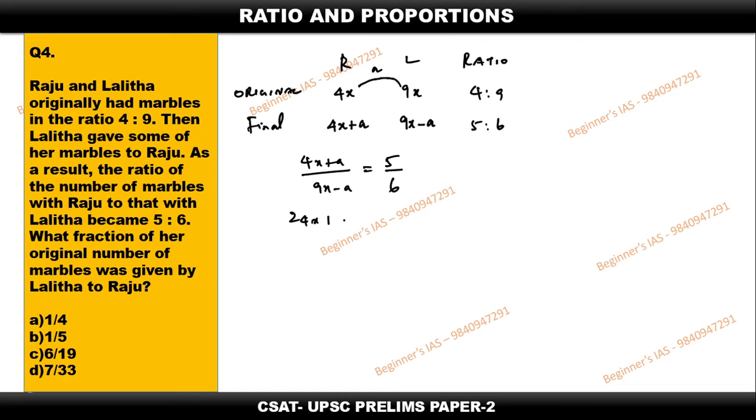24x plus 6a equals 45x minus 5a. Therefore, simplify this: 6a plus 5a equals 11a, which equals 45x minus 24x, which is 21x. Find a: a equals 21x/11. So this is the value of a.